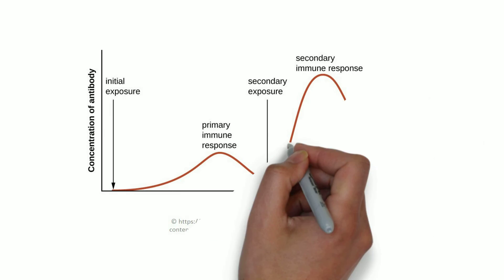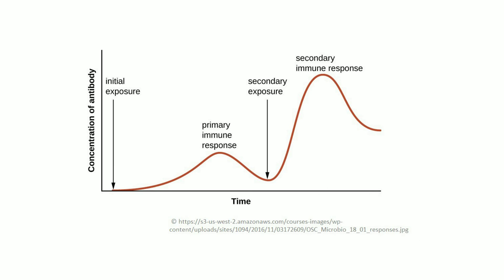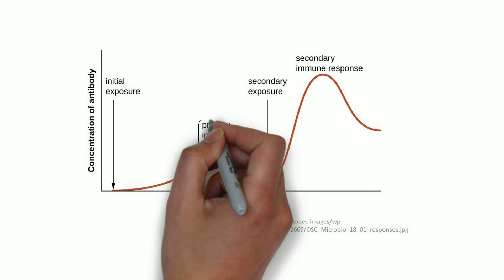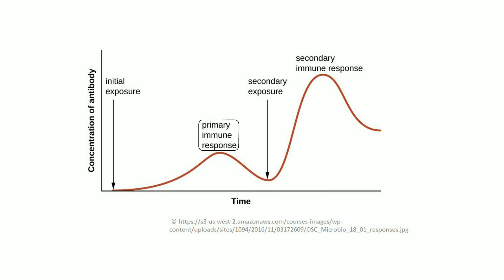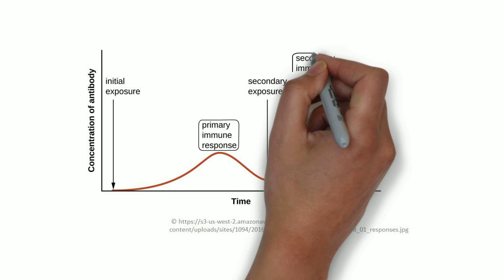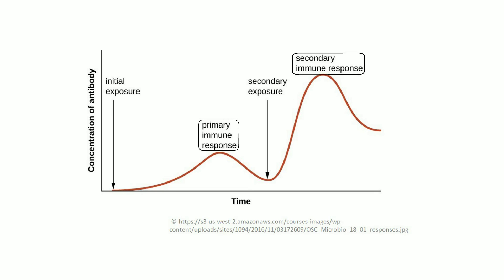This graph shows the concentration of antibodies and hence the immune response over time. It shows the difference in intensity between the primary immune response when the pathogen is encountered for the first time, and the secondary immune response when the pathogen is encountered again.